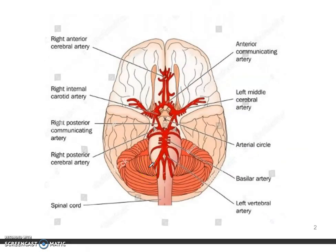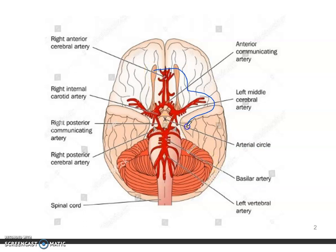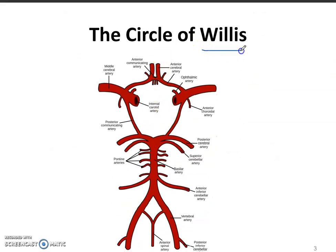As you can see, it's just the blood supply for the brain. This is the right cerebral artery, this is the anterior communicating artery, this is the left middle cerebral artery, this is the right internal carotid artery, and this is the right posterior communicating artery — the arterial circle. This is the right posterior cerebral artery, and this is the basilar. You can see this all is making a circle.